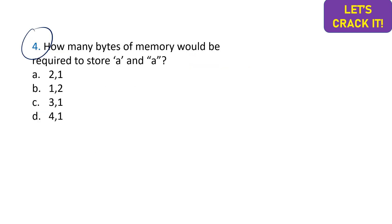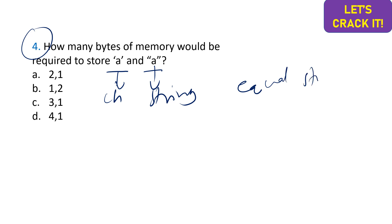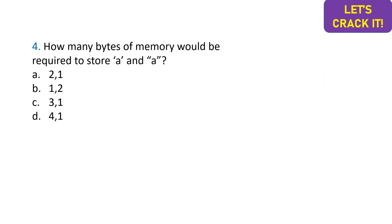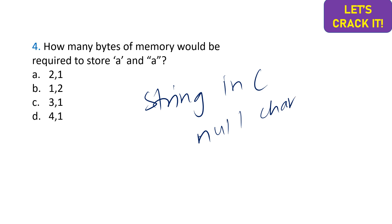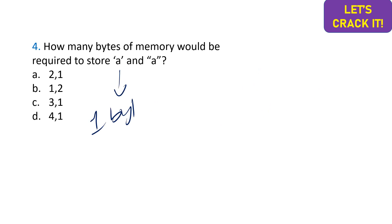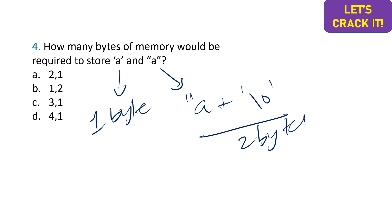The fourth question asks how many bytes of memory are required to store 'a' (a character) versus "a" (a string). You might think both store a single character and occupy equal storage, but that assumption is wrong. In C, strings are always terminated by a null character. So the character 'a' requires only 1 byte, while the string "a" is stored as 'a' plus the null character '\0', requiring 2 bytes.